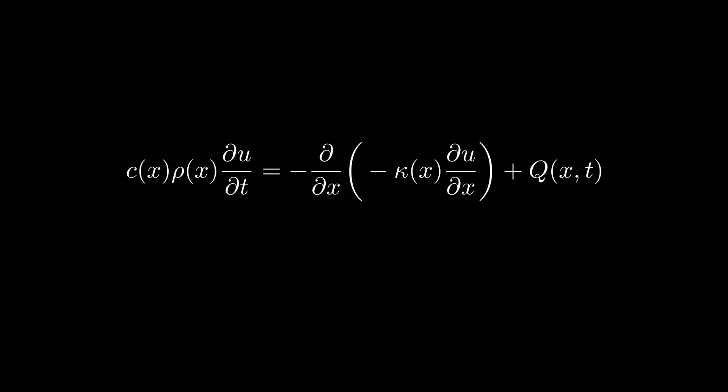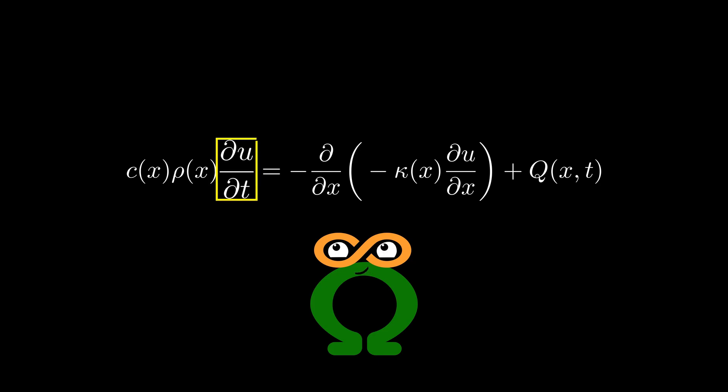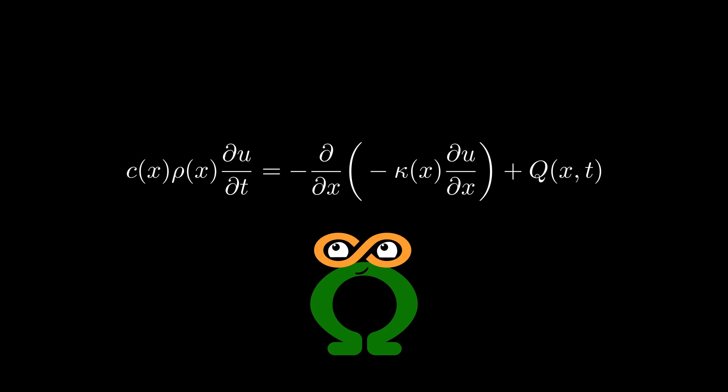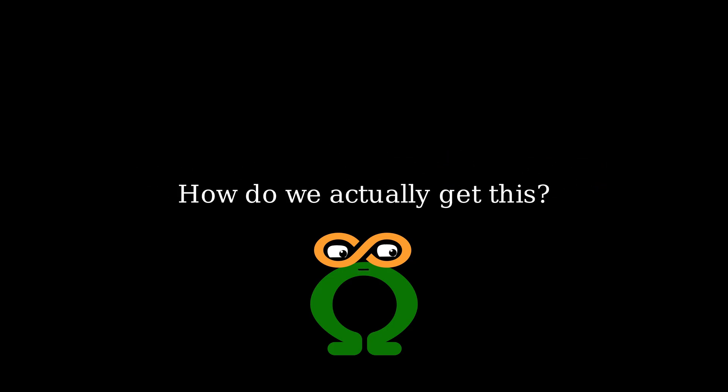As you can see, the heat equation in 1D itself looks quite scary with the time derivative and a second order spatial derivative of the temperature distribution with some coefficients c, rho, kappa, all of these attached to both time and space derivatives alongside a source term. Let's just see how we actually come up with this partial differential equation.